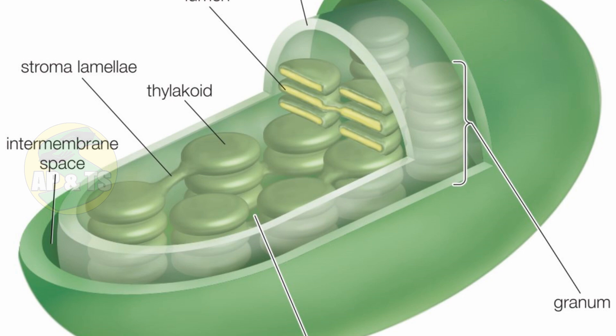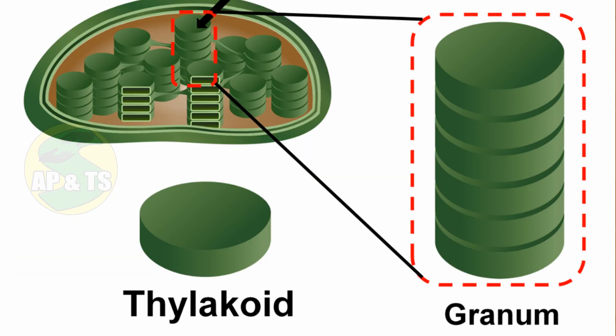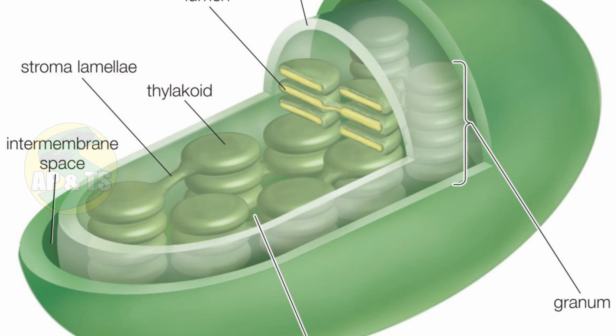Grana is plural and its singular form is granum — if it is one, you call it granum; if there are many, you call it grana. Each granum consists of many disc-like structures called thylakoids. These thylakoids are piled up one over the other — they look like coins arranged one over the other. All these thylakoids together piled up form a bunch-like structure called a granum. There are nearly 10 to 100 such bunch-like structures in each chloroplast, and all these together are called grana.